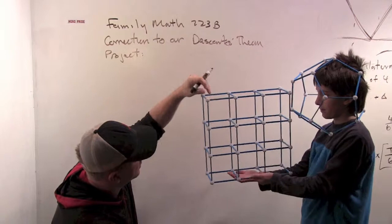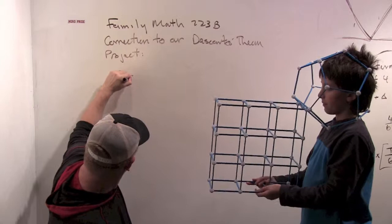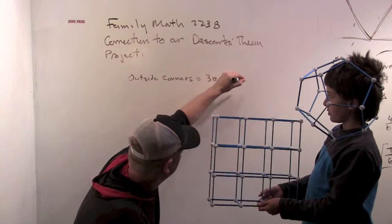Okay, and what happens on these eight corners on the outside? Well, you have three 90-degree angles. Okay, so outside corners. Three times 90 degrees, which is? Which is 270. 270.